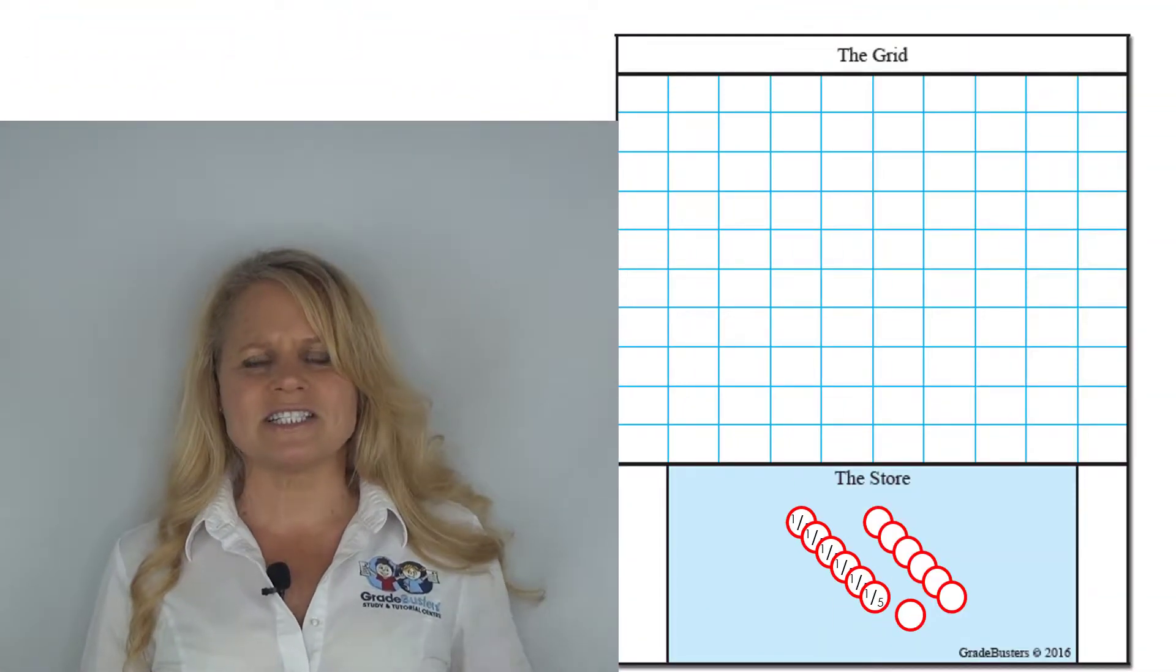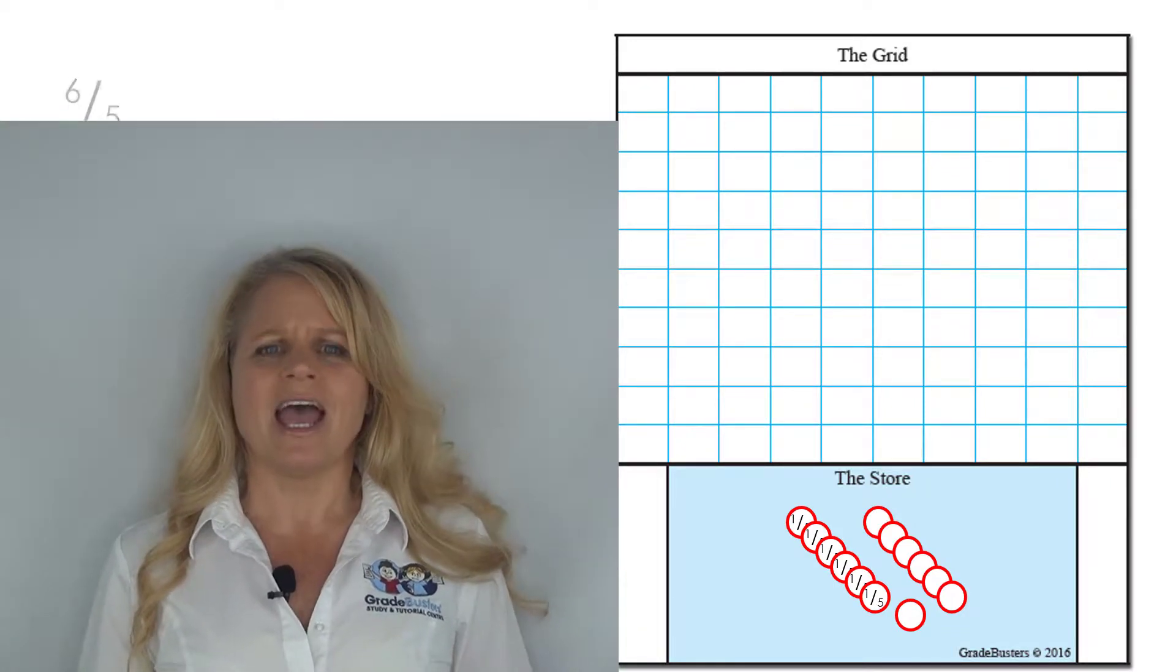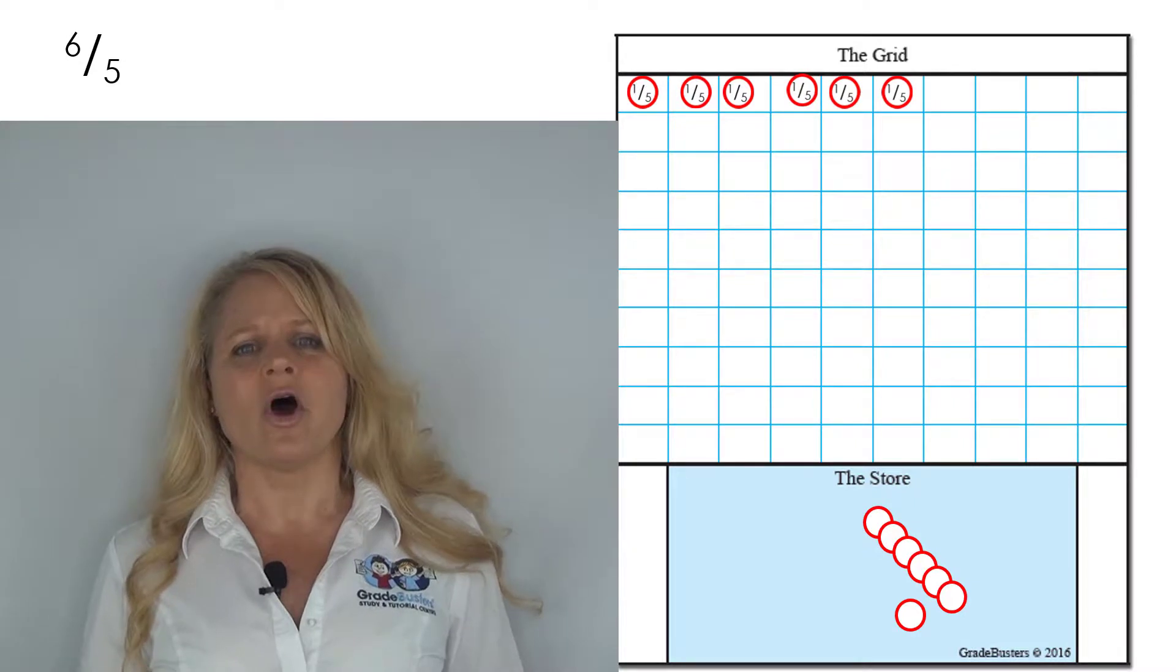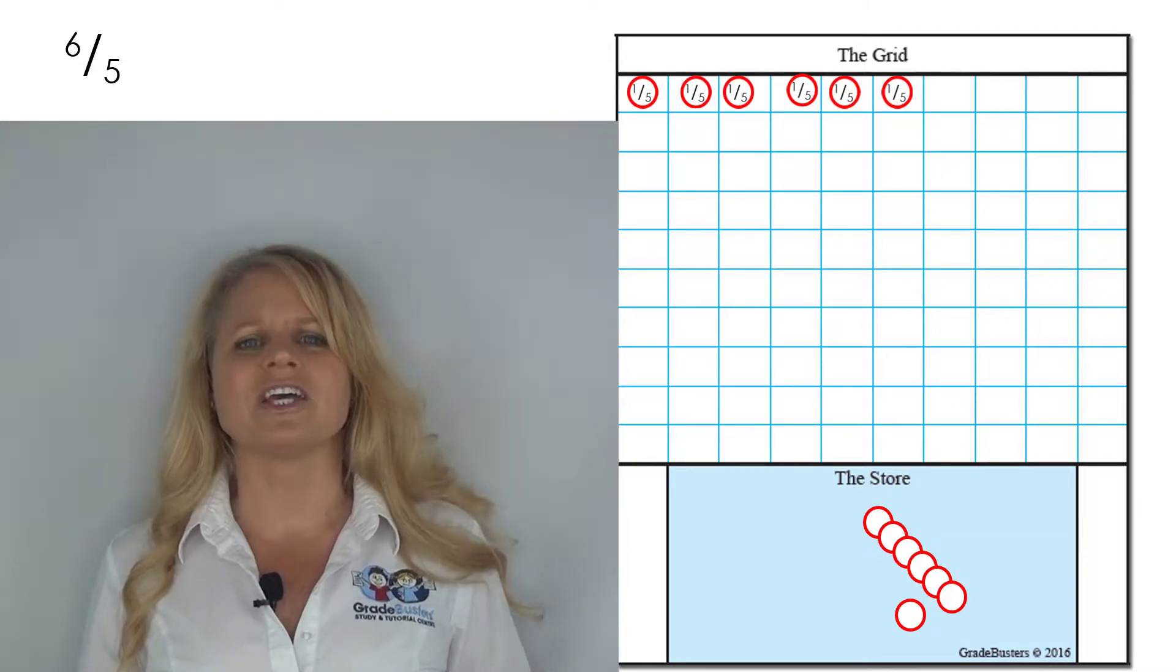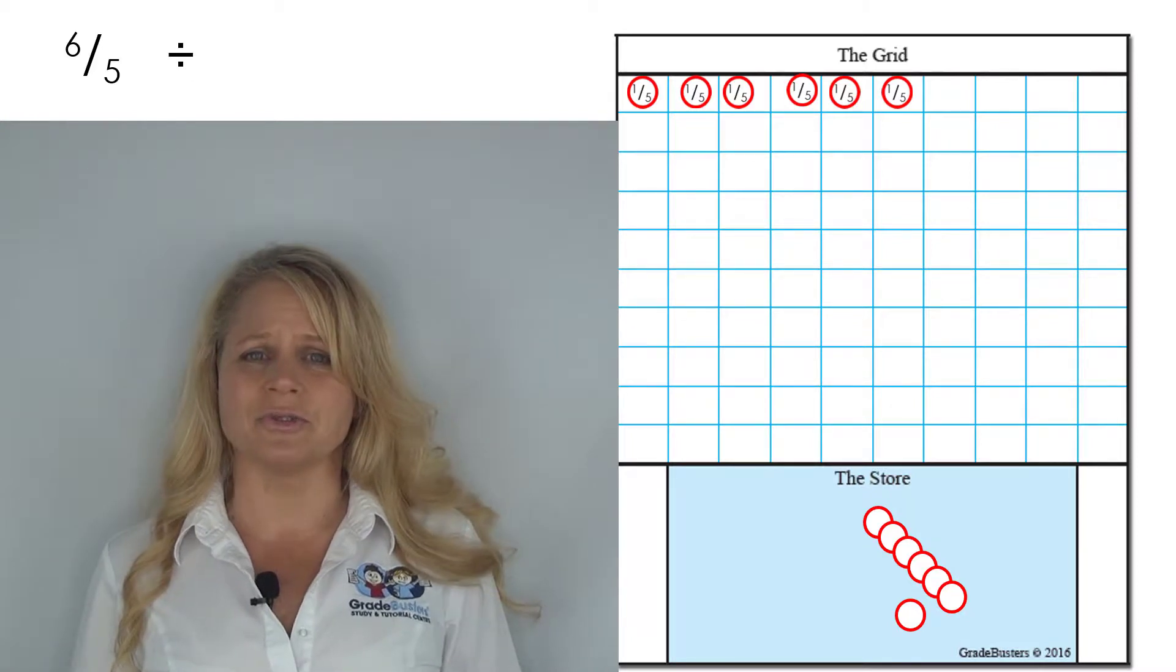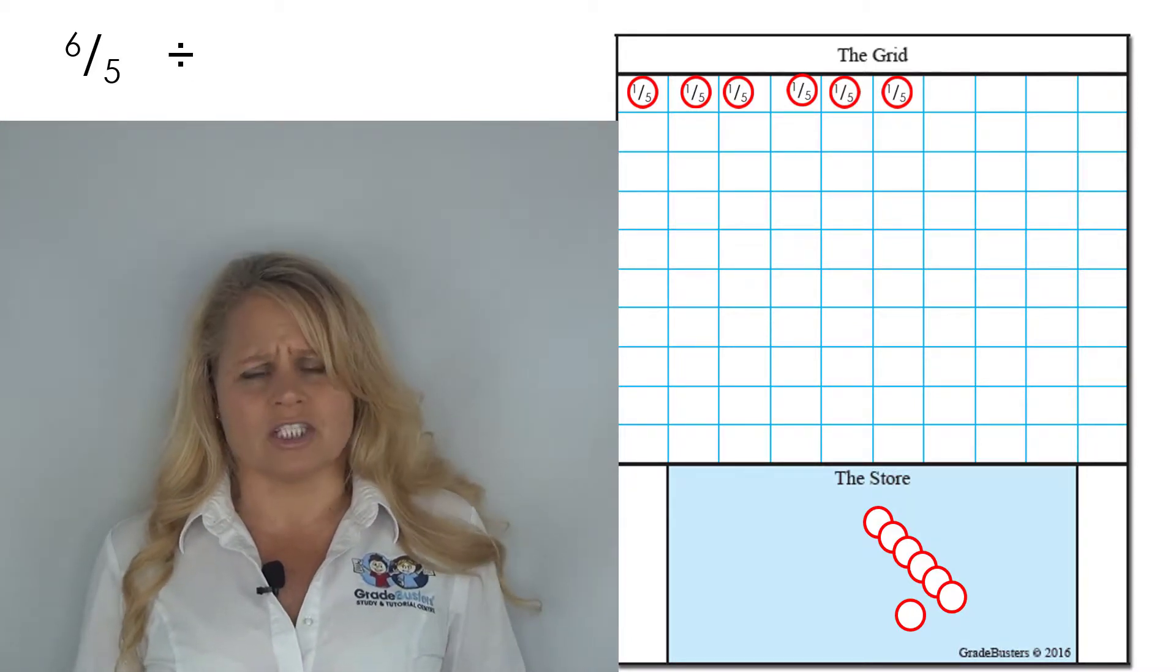Here we go. Remember, the symbols in math tell you what to do. They're instructions. This symbol is telling us to get six of those things called fifths. The division symbol tells us to think about groups. What size groups are we thinking about? Well, the next symbol tells us: three of those things called fifths.